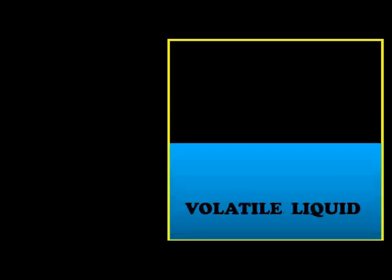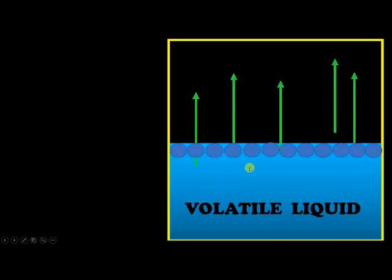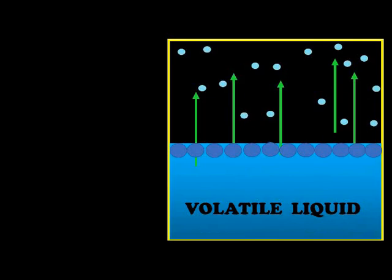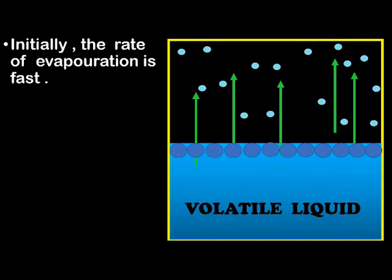Let us consider a closed container with a volatile liquid. I have taken a volatile liquid because its top layer molecules evaporate even at room temperature. When the liquid evaporates it forms vapors, and initially the liquid gets quickly evaporated — so the rate of evaporation is fast.